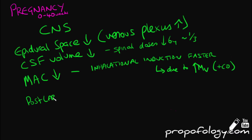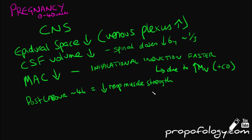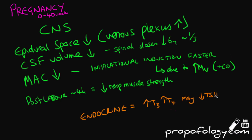Post labour, it's important to remember that for about 4 hours the lady has reduced respiratory muscle strength. In the endocrine system, the thyroid increases its production of T3 and T4, which may suppress TSH. Insulin secretion is increased during pregnancy, but so are anti-insulin hormones and cortisol. Depending on the interplay between such hormones, this can cause gestational diabetes in pregnant ladies.